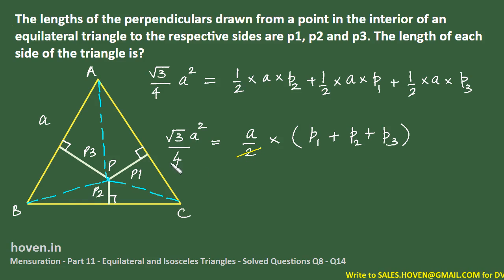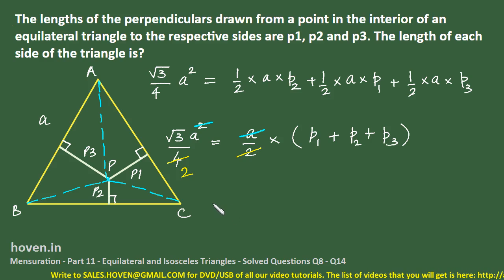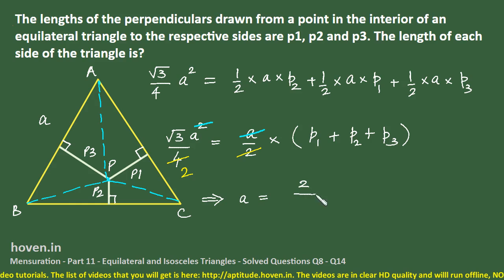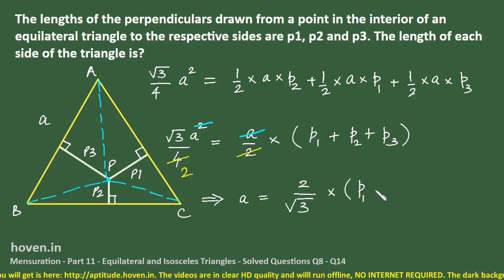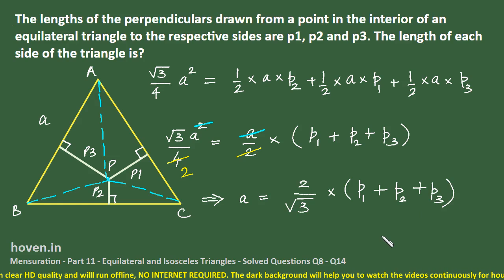Cancelling 2 with 4 and dividing both sides by a, we get (√3/2)a = p1 + p2 + p3. Therefore, a = (2/√3) × (p1 + p2 + p3), which is the required answer and it is among the given options.